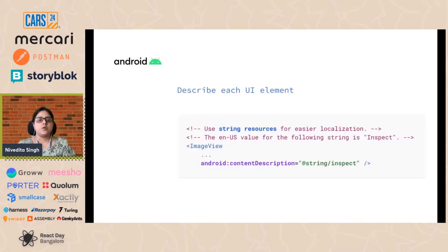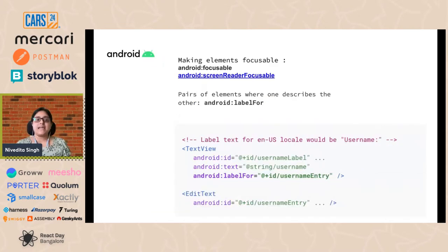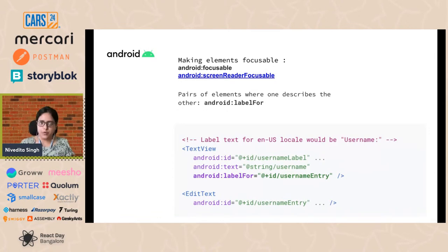Natively on Android, you can use the content description attribute to describe a particular UI element. Similarly, you can set the screen reader focusable attribute to true for a particular view so all of its inner objects can be collected together, with the focusable attribute of all inner objects set to false. When the screen reader goes through this view, all the inner objects are grouped together and the screen reader reads out all properties one by one, so users don't have to separately focus on each.